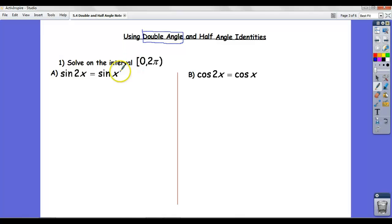Okay so we have done solving equations so far. Let's take a look at this one. So sine of 2x is equal to sine x and we need to solve on the interval 0 to 2 pi.